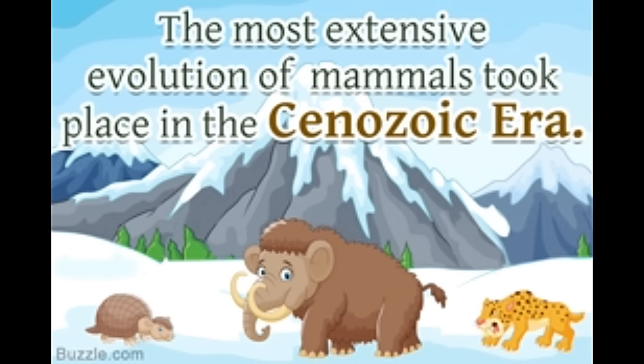Instead, the era is now divided into three periods — paleogene, neogene, and quaternary — ranging from the oldest to the youngest. They are again subdivided into a number of stages and epochs.